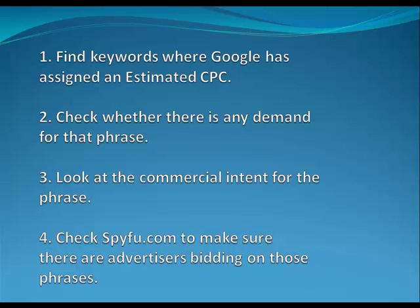Once you've narrowed your list down to buyer keywords, go over to SpyFu and check how many adverts are actually being used for each phrase. Look for phrases that have 10 or more adverts — you'll have a good idea that people are actually bidding on those key terms, and if they're bidding on them there's a good chance they're making money from them. You can always use a tool like Ad Spy Pro to spy on those phrases for a month or so just to verify if you wanted to.